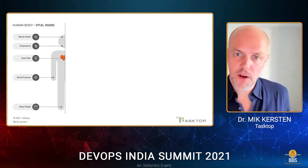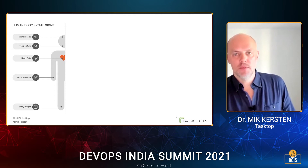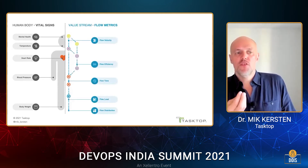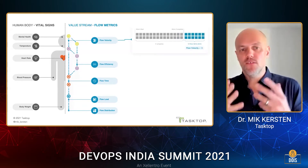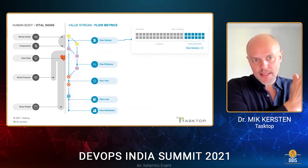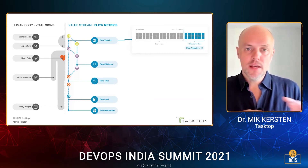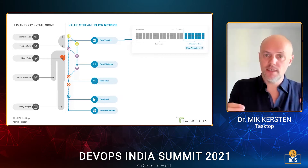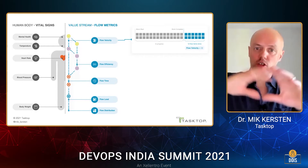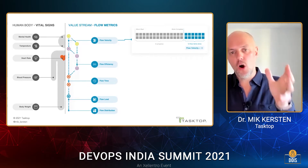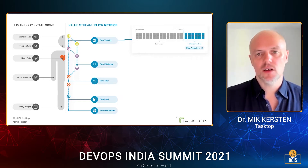With these four flow items in mind as the things that flow through our value streams, we need some kind of vital signs — some way of detecting whether a value stream is healthy or has problems. Flow velocity is simply the end-to-end amount of flow items completed — the amount of features, defects, risks, and debt completed over a particular window of time. The Flow Framework discards things like story points; at this higher level, we simply count the number of flow items completed over that unit of time — that sprint, that release, that quarter.